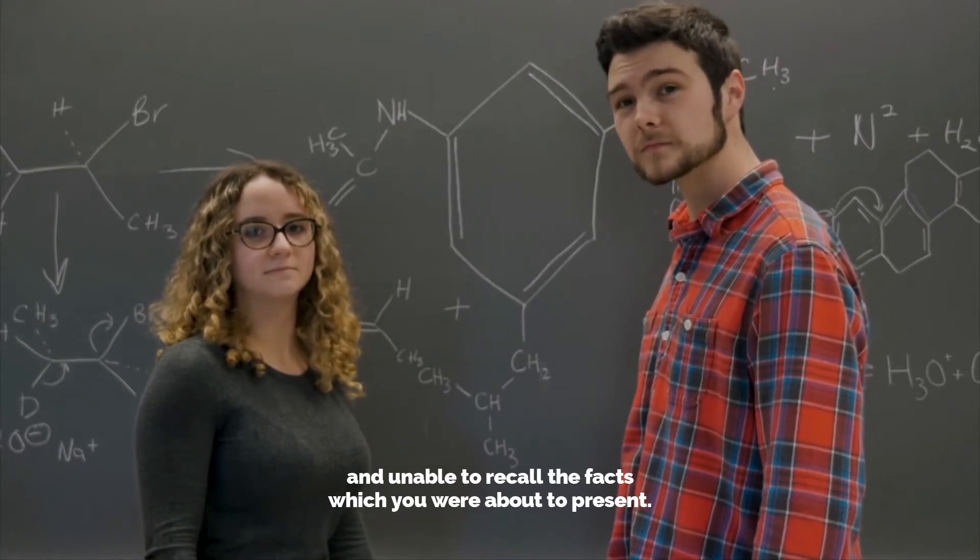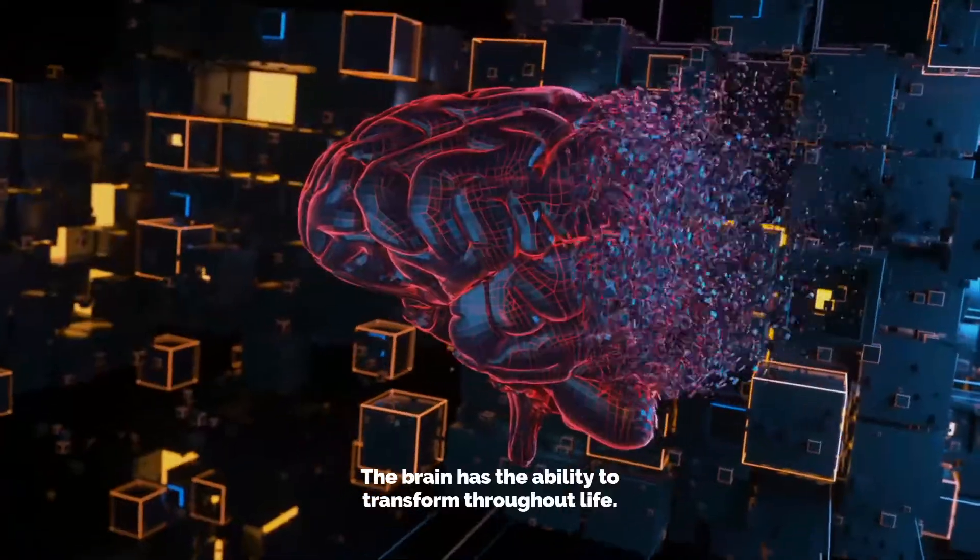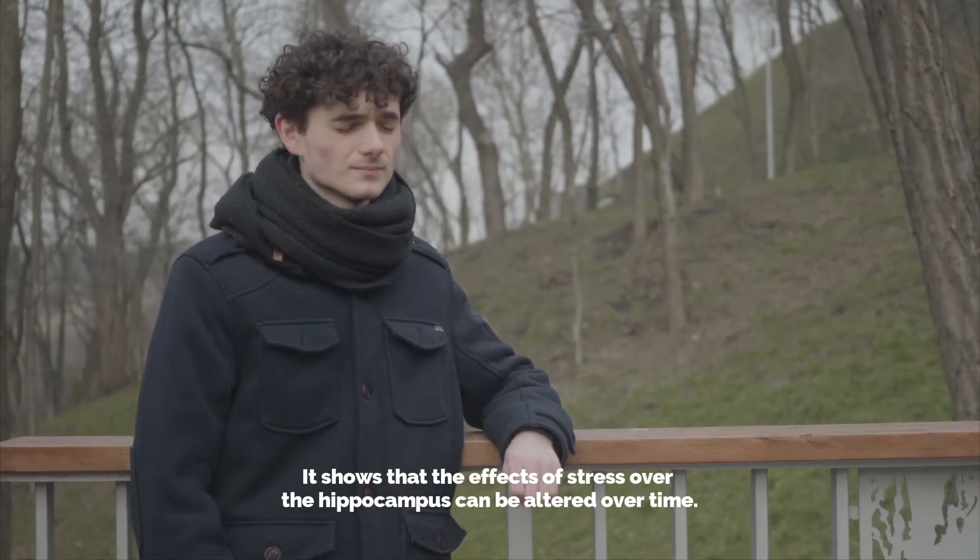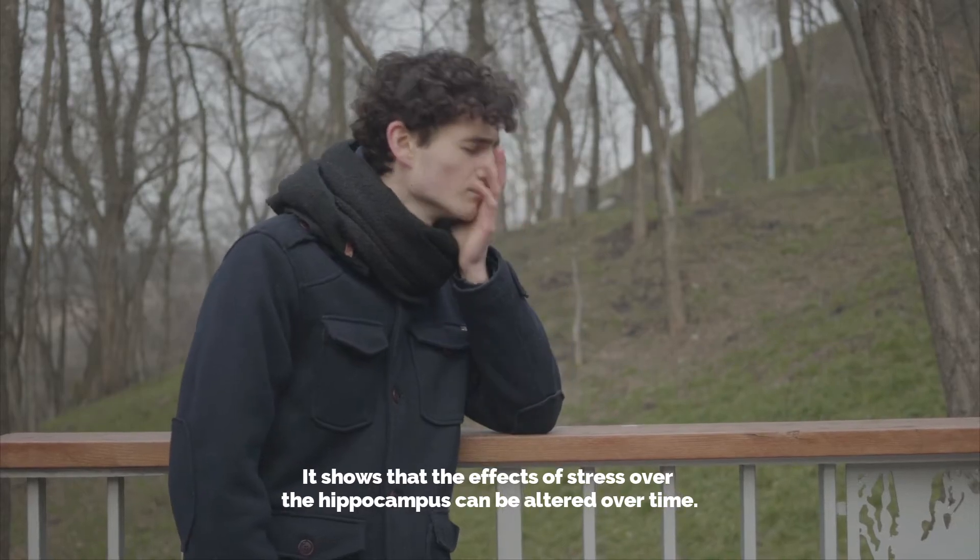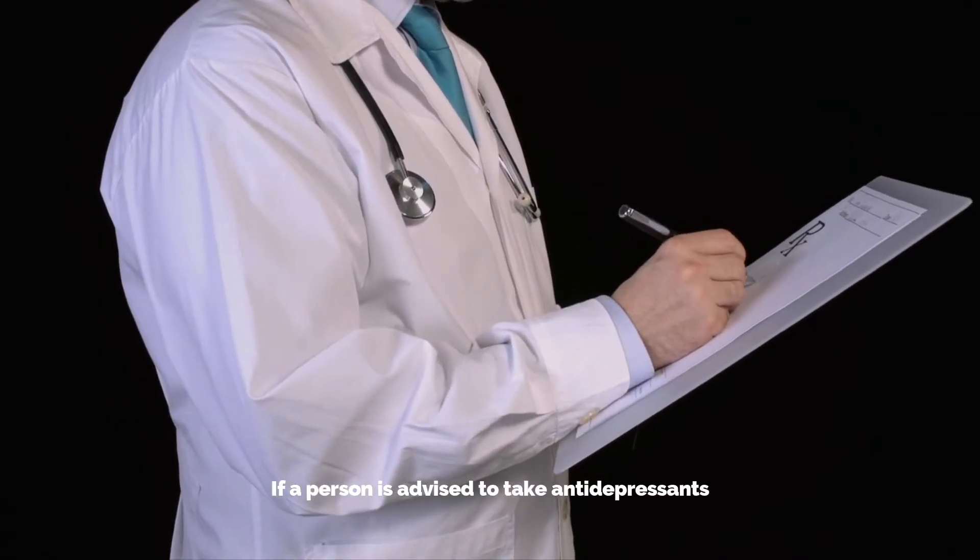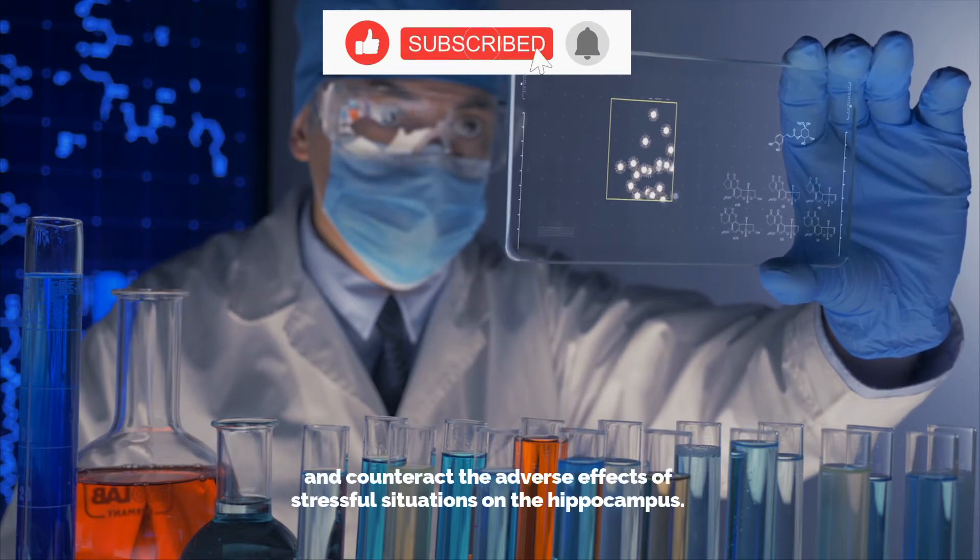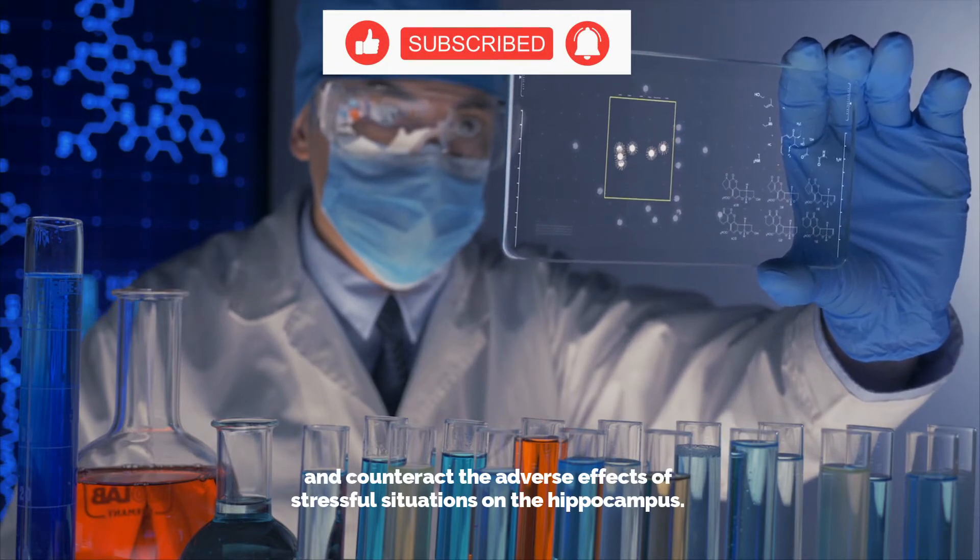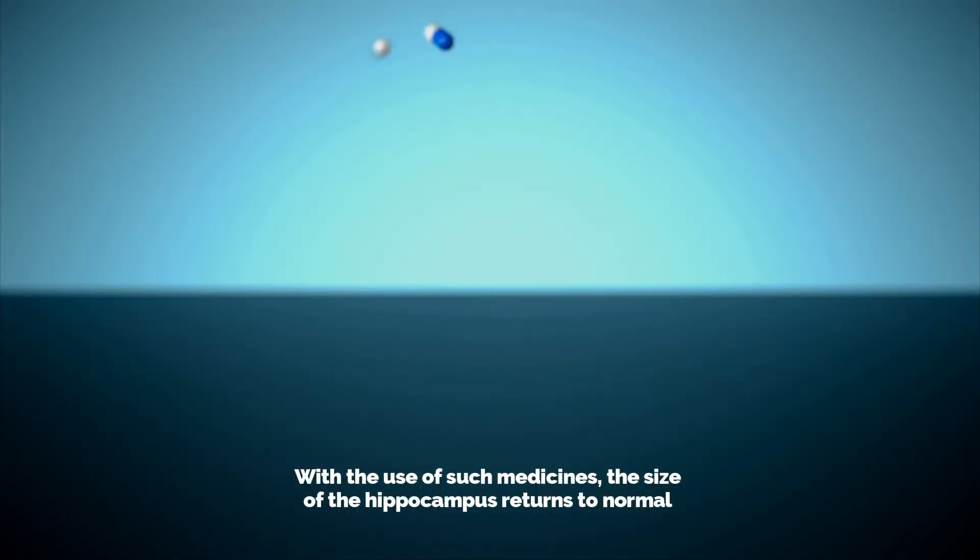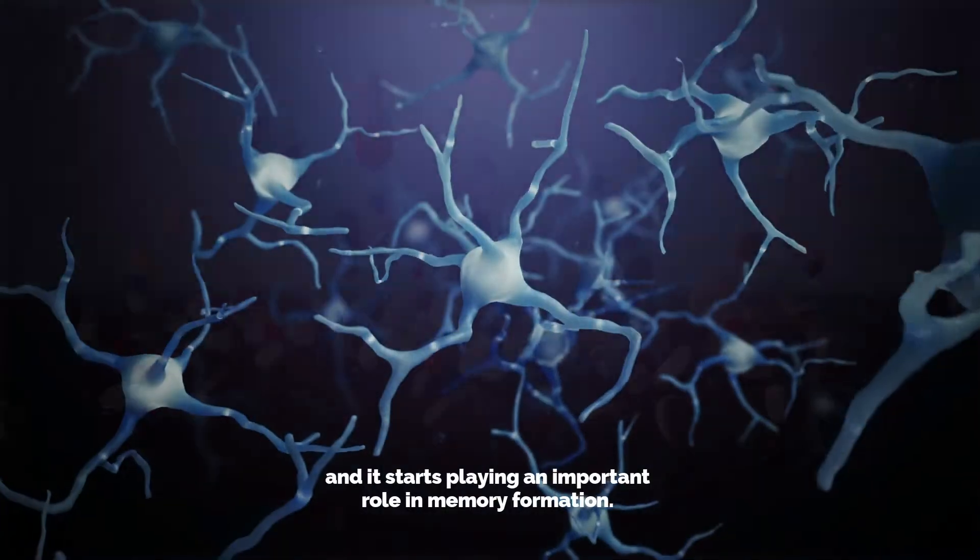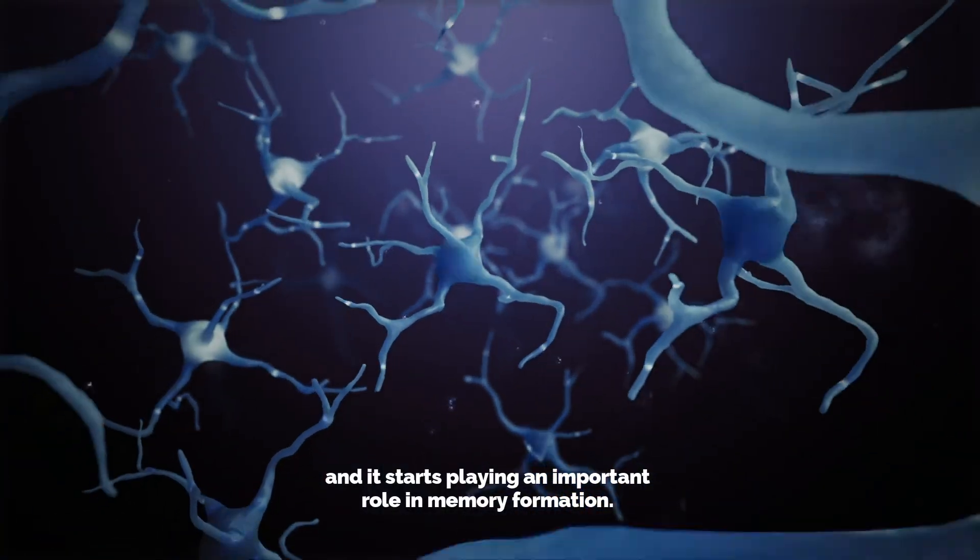The brain has the ability to transform throughout life. This shows that the effects of stress on the hippocampus can be altered over time. If a person is advised to take antidepressants, then the levels of serotonin rise and counteract the adverse effects of stressful situations on the hippocampus. With the use of such medicines, the size of the hippocampus returns to normal and it starts playing an important role in memory formation.